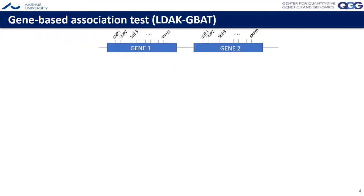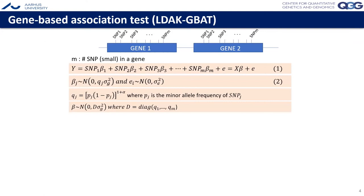LDAC-GBAT tests gene-phenotype associations by considering a gene as a window including m SNPs, assuming a linear model with betas as effect sizes and e as environmental noise. We assign prior distributions to beta_j's and e, where sigma-squared_g and sigma-squared_e denote genetic and environmental variance components, and the q_g values are pre-specified constants determined by the choice of the heritability model.